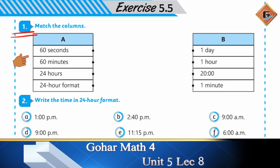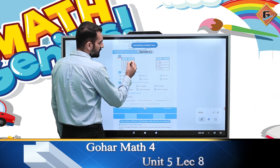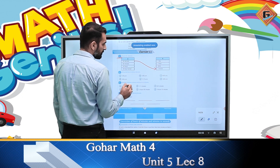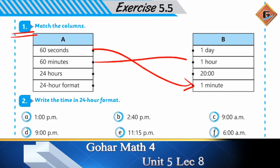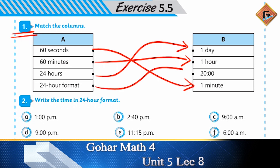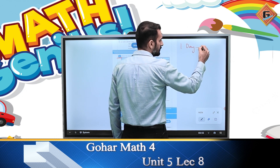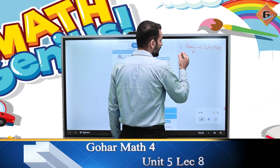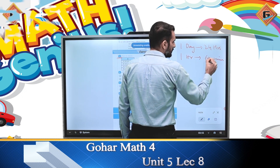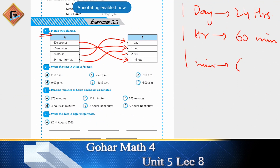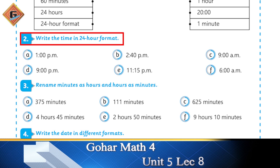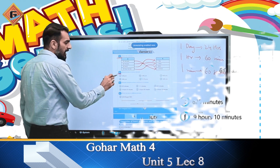कि seconds, minutes, hours और 24-hour format में कहाँ पर किसके साथ fit होता है। तो 60 seconds equal होते हैं one minute के, 60 minutes equal होते हैं one hour के, 24 hours equal होते हैं one day के। और यह बात याद रखी जाए कि एक दिन में 24 hours होते हैं, one hour में 60 minutes होते हैं।